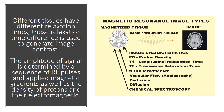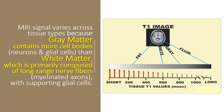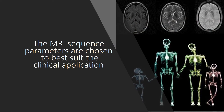MRI signal varies across tissue types because gray matter contains more cell bodies than white matter, which is primarily composed of long-range nerve fibers or myelinated axons, along with supporting glial cells. The MRI sequence parameters are chosen to best suit the clinical application.